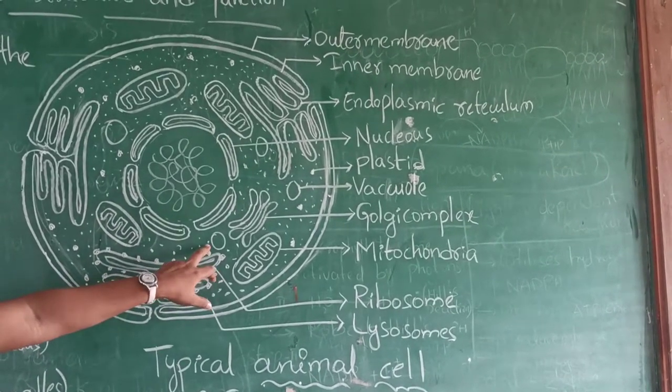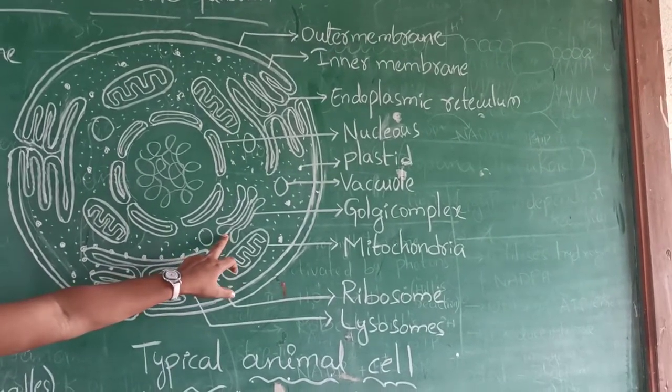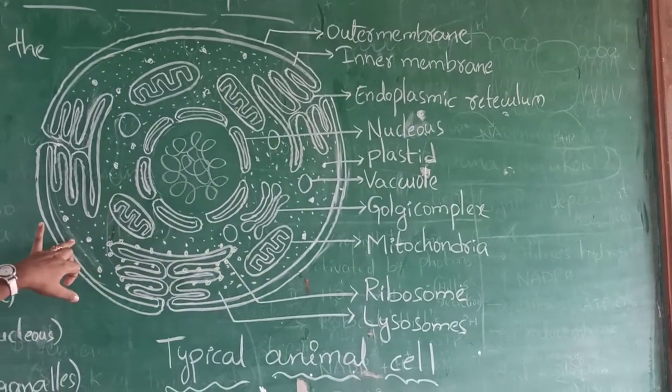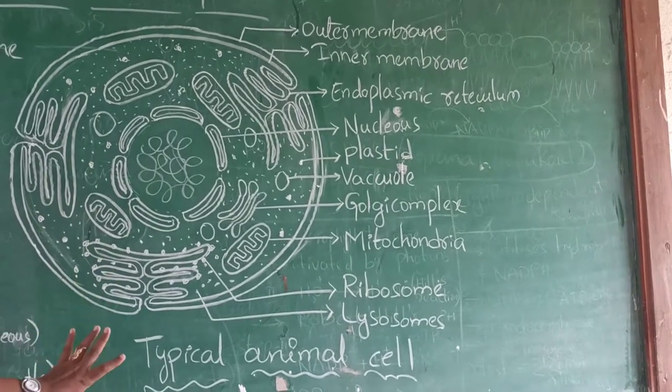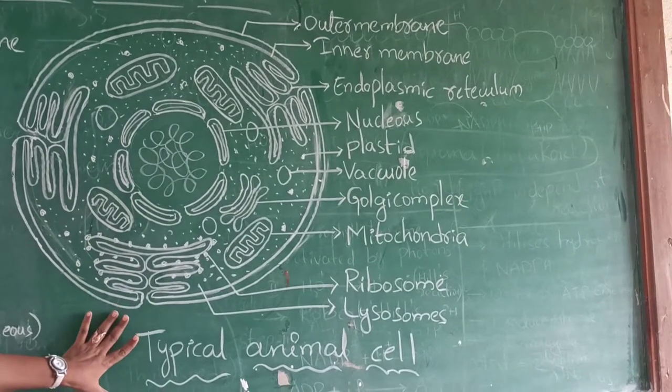Here, some vacuoles will be there, and Golgi complex and plastids will be there, and this is the total cytoplasm. This is called a typical animal cell.